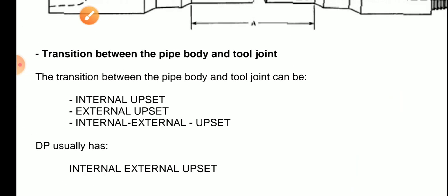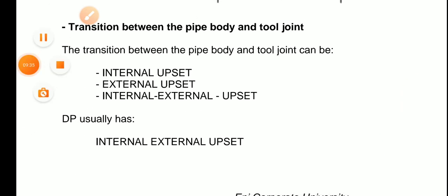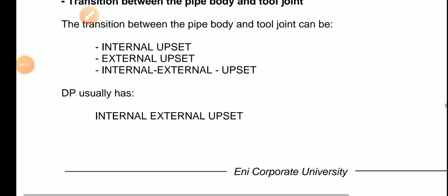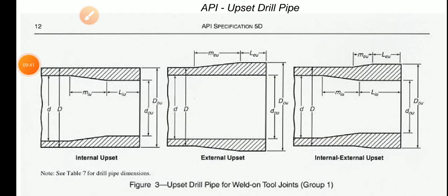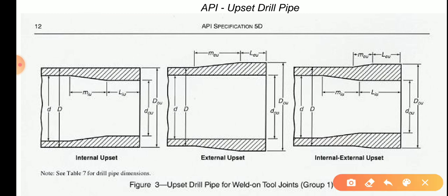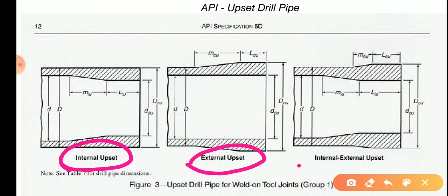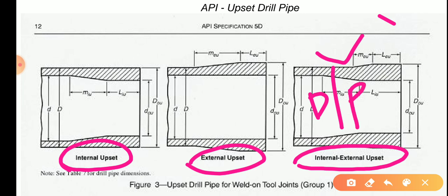I hope you get some information about drill pipe. Now we see the API specifications for the upset of drill pipe. The first one is internal upset, the second is external upset, and the third is internal-external upset. This internal-external upset is what we mostly use for drill pipes.